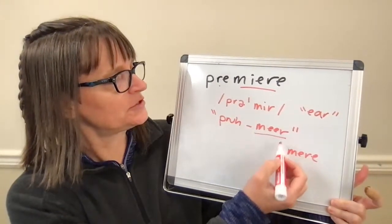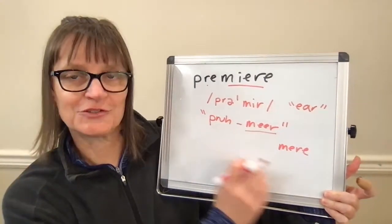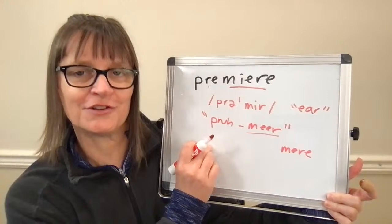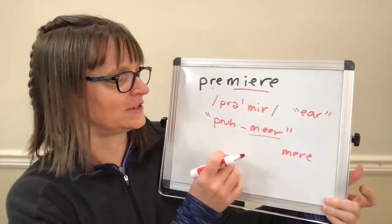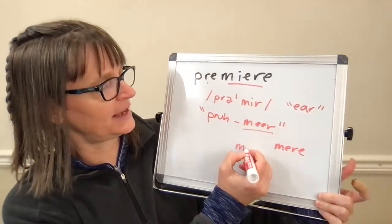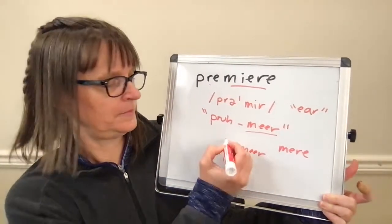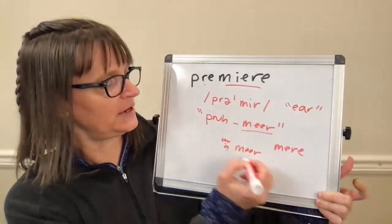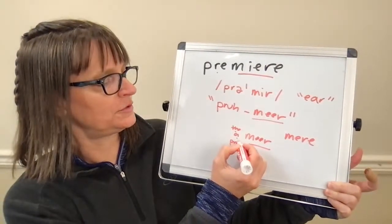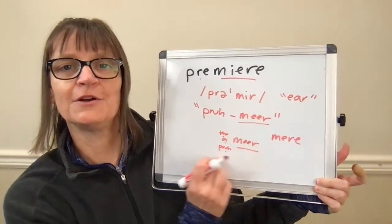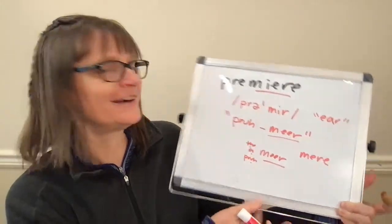Anytime we have second syllable stress, it can be helpful to just say the stressed syllable and then tack on your first syllable really briefly and shortly. Like you could even say 'mere,' 'a mere,' 'the mere' — that's going to help you get the rhythm. Then move to 'premiere,' 'mere,' 'premiere.' Thank you for that request. I saw that viewer had requested the word and suggested coming to the live class, so I'm glad you were able to make it.